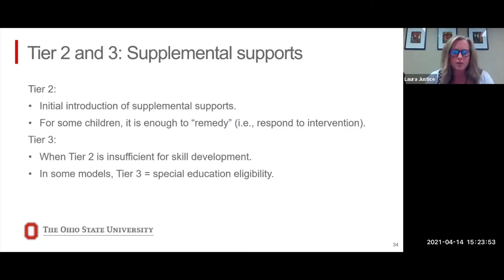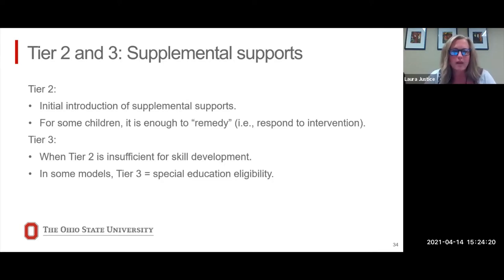I really want to be clear that tier two and tier three are supplemental supports. The content that Professor Duke shared is actually more important than what I'm sharing, because if we get tier one right, very few students are going to need tier two and tier three. As a general rule of thumb, if your tier one reading curriculum is not supporting the reading development of at least 80% of kids in your classroom, your curriculum needs to be switched out or you need to figure out how to amplify your use of that curriculum. Tier two and tier three are supplemental supports provided to students who are not responding to the tier one environment.